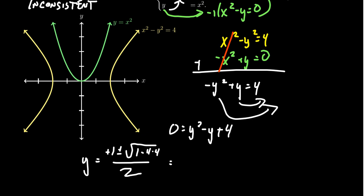Simplifying this thing here, you're going to get 1 plus or minus the square root of negative 15 over 2. And so this is the point right here.